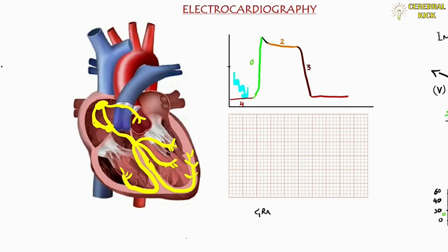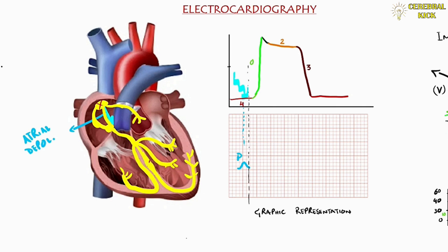We will study the graphical representation in the coming episode, but I am taking this opportunity so you can relate the cardiac action potential with the waveform generated on the graph. The impulse coming from the SA node travels all the way down to the AV node, and this is registered on the ECG as a small deflection called the P wave. The delay at the AV node is represented on the ECG as the PR interval.